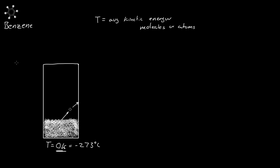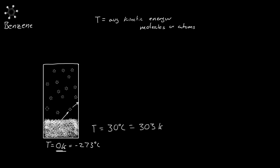One molecule is not really that much. So let's say we increase the temperature to 30 degrees Celsius — that is 303 Kelvin, quite a bit of a jump. As we increase the temperature and watch it increase, more molecules of benzene will just start popping out and bouncing around, hitting the container and increasing the pressure.